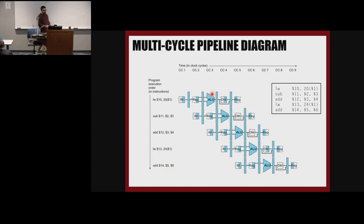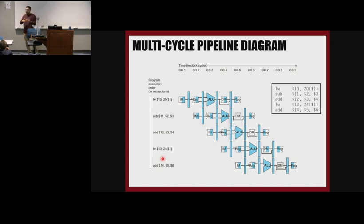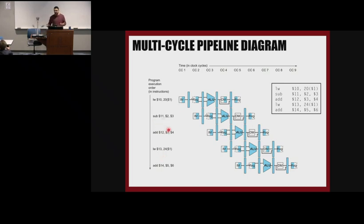These instructions don't have any dependencies. We're reading something from memory, moving it to register 10, subtracting registers 2 and 3 and putting the result in 11, adding 3 and 4 and putting the result in 12, loading something from memory and adding to other registers and putting it in 14 — no dependencies. All of these instructions can be done independently and can be reordered. It doesn't matter if you run the add first or the subtraction first.